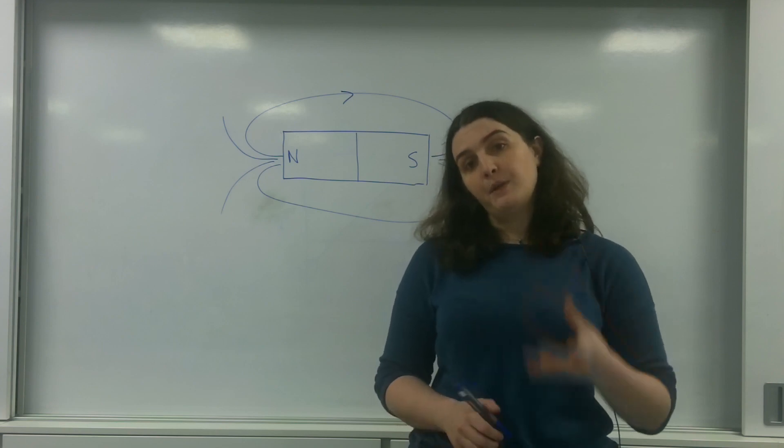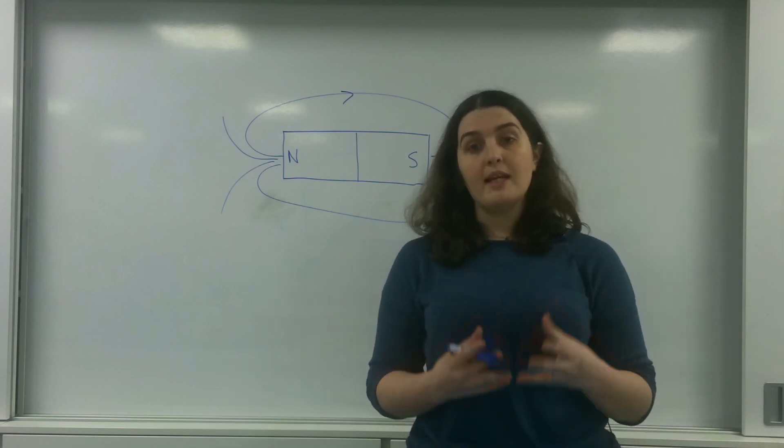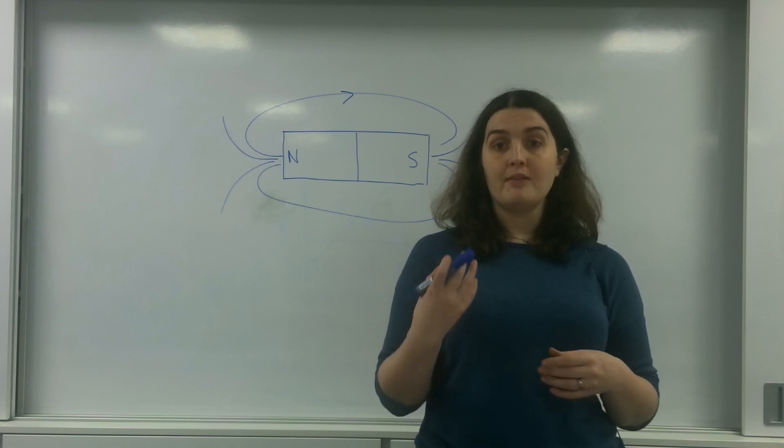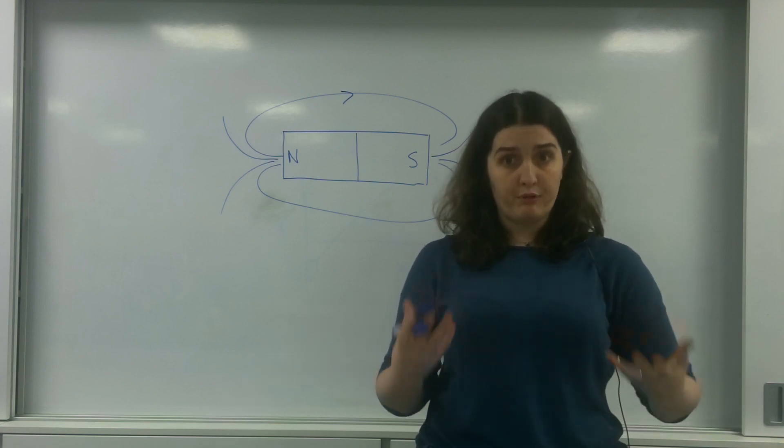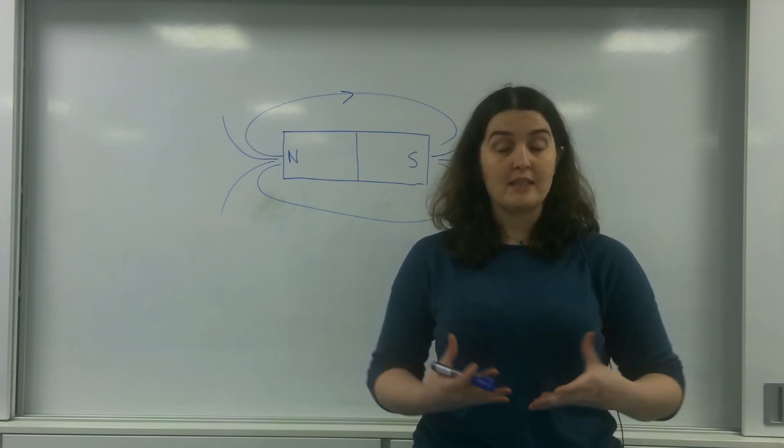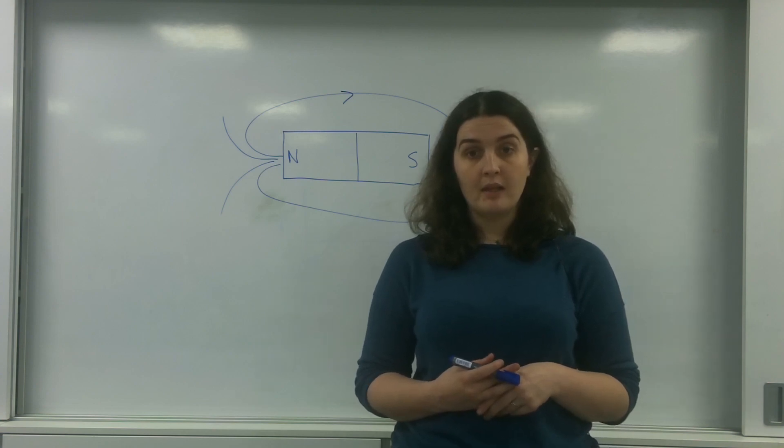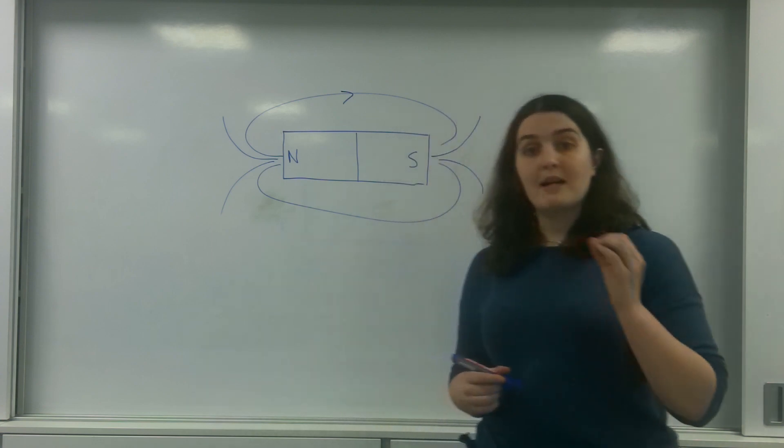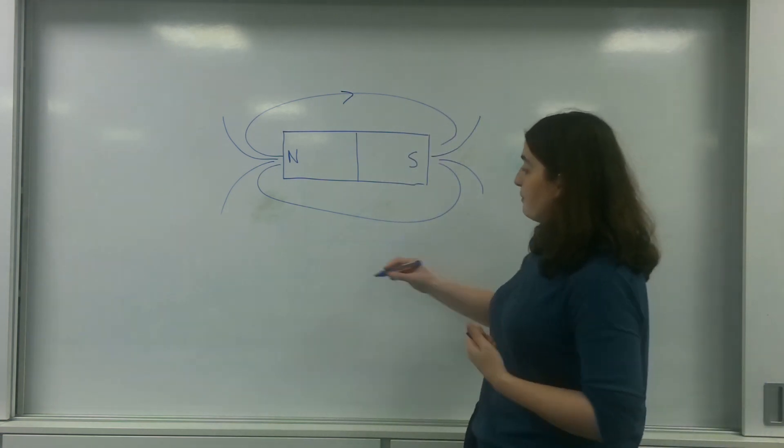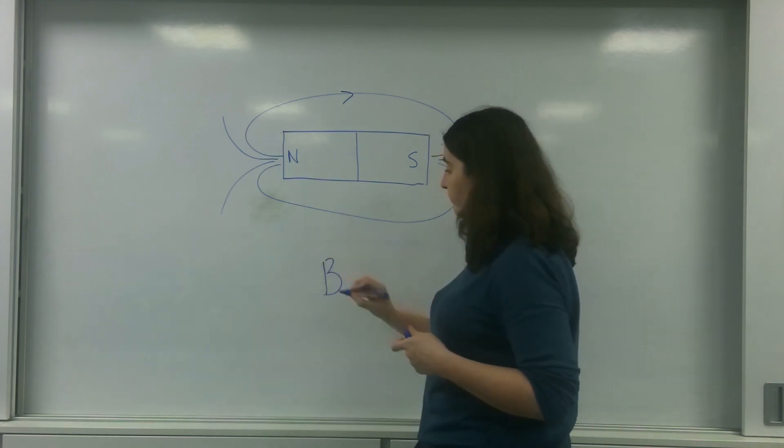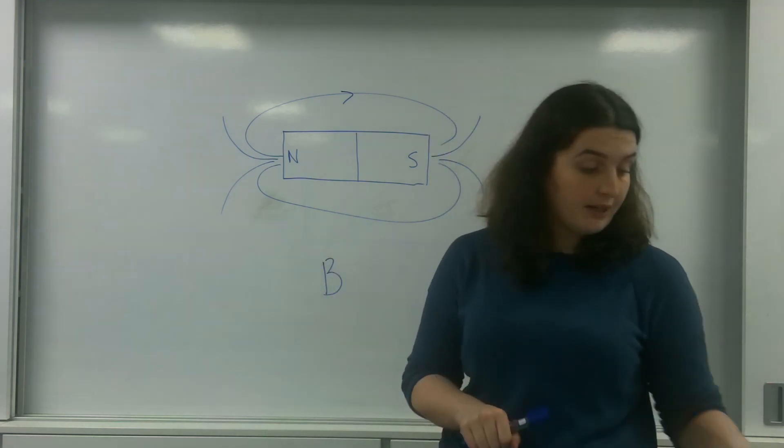Now magnetic field strength is the relationship between the force that the object feels divided by the property that is affected by the field. And in magnetic fields, the magnetic field strength is represented by the letter B.